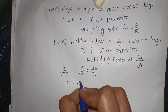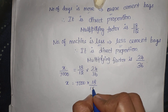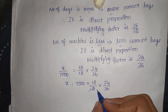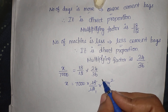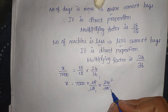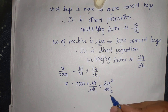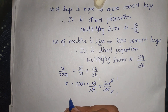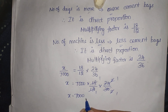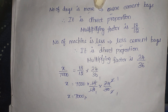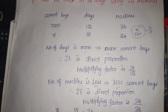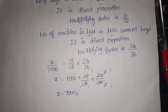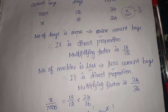X is equal to 7000 into 18 divided by 12, into 24 divided by 36. So 12 twos are 24; 2 times 18 is 36. So X equals 7000. Here: 18 days, 24 machines — we have 7000 bags.